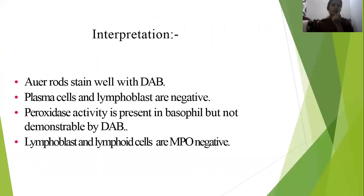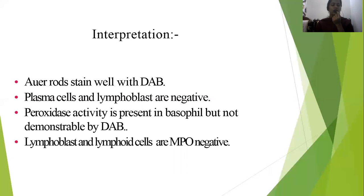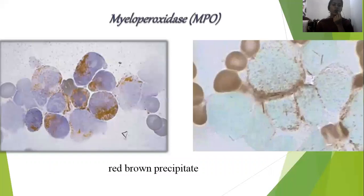Auer rods stain well and appear as red-colored rods in the cytoplasm of the cell. Peroxidase activity is present in Auer rods, but a different substrate is needed. Plasma cells and lymphoblasts are MPO negative. In summary, myeloid series cells are MPO positive and lymphoid series cells are MPO negative.